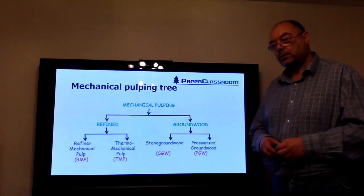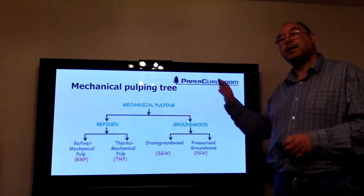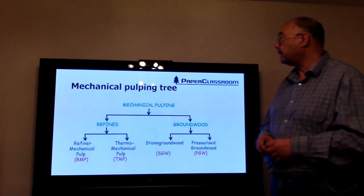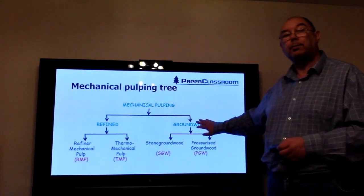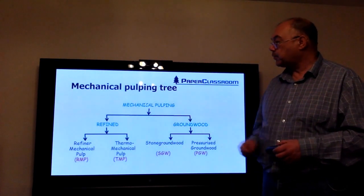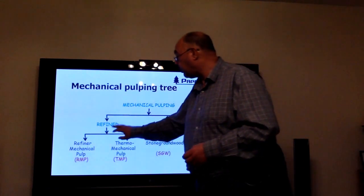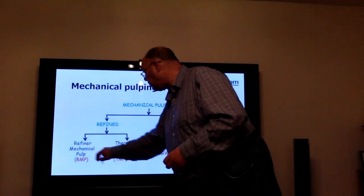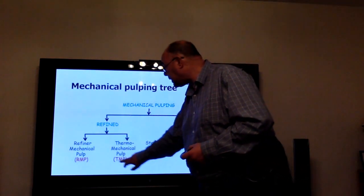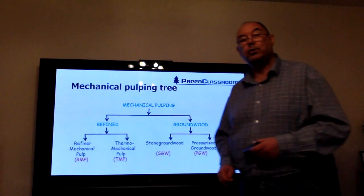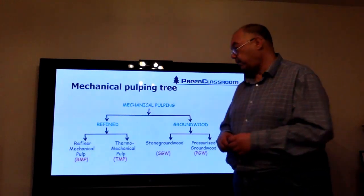Just going back to the pulping tree for a moment, if we just expand on that little branch of mechanical pulping, we said there were refined pulps and groundwood pulps. These are also subdivided. The refined pulps can either be simply RMP, where you take the wood chips and walk it through a refiner and do nothing else, or TMP, where you heat up the wood chips first before putting it through a refiner.